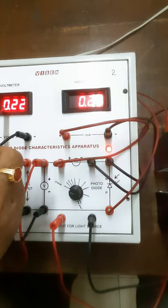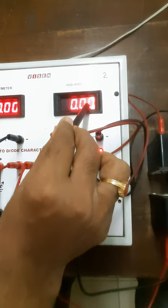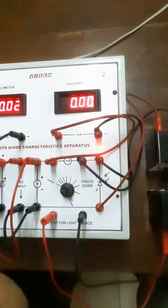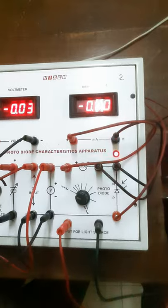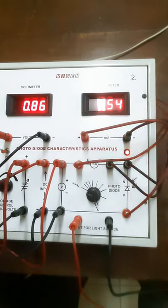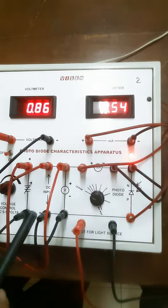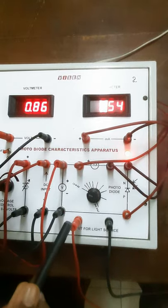Suppose if I vary the current to 0.5, then your corresponding current we are going to get it here. That will be completely shown in the tabular column. Like this, starting from 0.1 till 10 volt, it has to be varied in steps of whatever value is given in the tabular column.